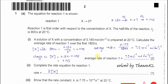Question 1A. We have Reaction 1, where X forms 2Y. Reaction 1 is first order with respect to the concentration of X. The half-life of the reaction is given as 900 seconds at 20°C. Part 1: a solution of X with a concentration of 0.18 mol per dm³ is prepared at 20°C. Calculate the average rate of Reaction 1 over the first 1,800 seconds.